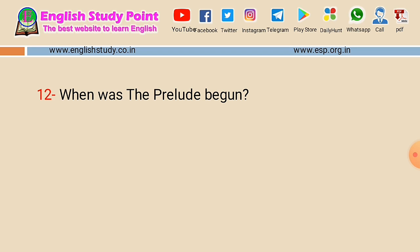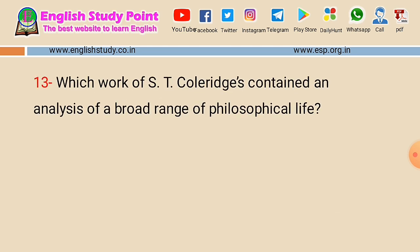Question number twelve: when was the Prelude begun? This is an important question. You have to tell the year in which the Prelude began. The answer is 1799, when its first version was published.